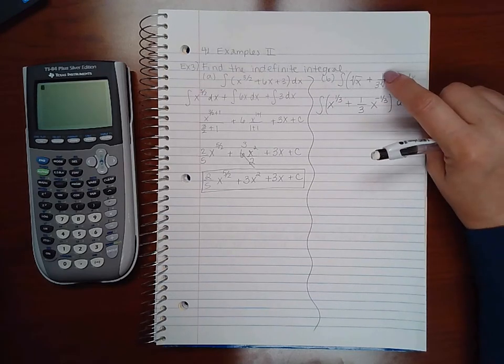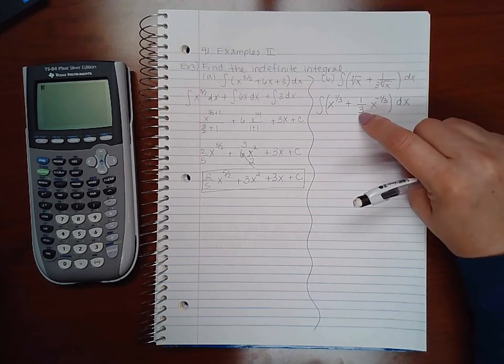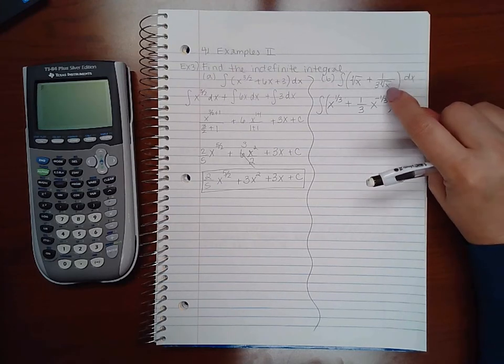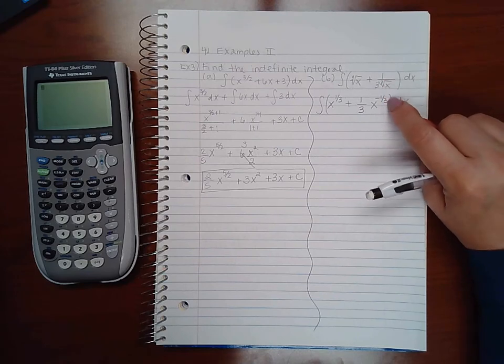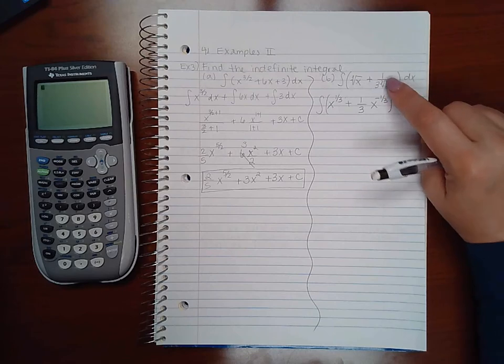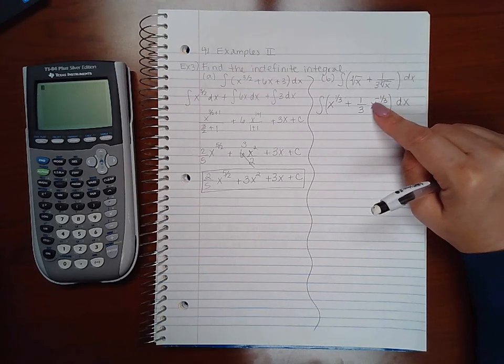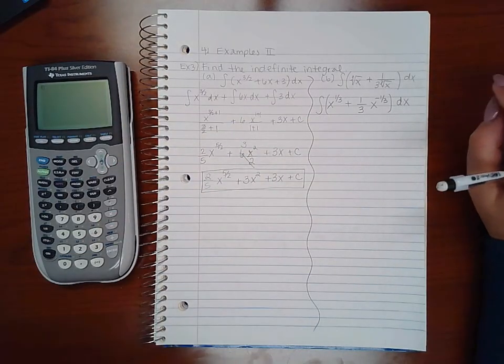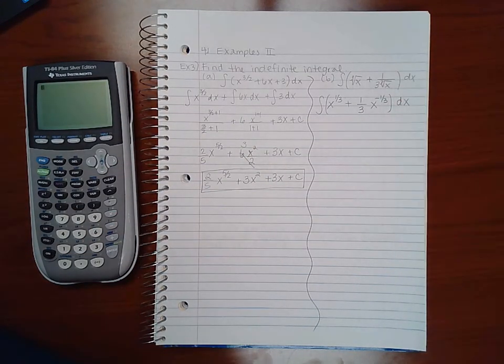It's actually one over three, so I have to keep that the way it is. Here my exponent is one, which is why my numerator is one, and my index is three, which is why my denominator is three. But because it was downstairs, it's actually a negative exponent. I still have to put it in parentheses because I still need to integrate both terms.